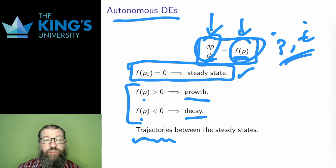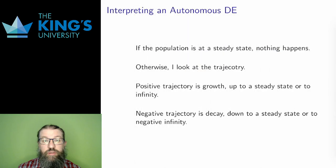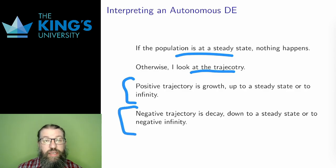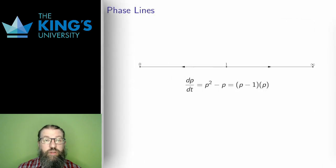This gives me an approach to study an autonomous system. I calculate the steady states. At a steady state, nothing happens. Then I look at the trajectories, the behavior between the steady states. A positive trajectory is growth, either up to the next steady state or unbounded to infinity. And a negative trajectory is decay, either down to the next steady state or bounded down to negative infinity. A phase line is just a picture that captures all of this information. It lets me know how the population will behave without ever having to solve the differential equation.